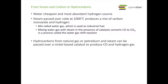If you take this water gas and mix it with steam with some catalysts, you end up converting the carbon monoxide to carbon dioxide. This is called the water gas shift reaction. The water gas reaction: you take carbon in the form of coke and steam at 1000 degrees Celsius to make carbon monoxide gas and hydrogen — which is water gas. Hydrocarbons from natural gas or petroleum can also be passed over a nickel-based catalyst to give carbon monoxide and hydrogen gas.